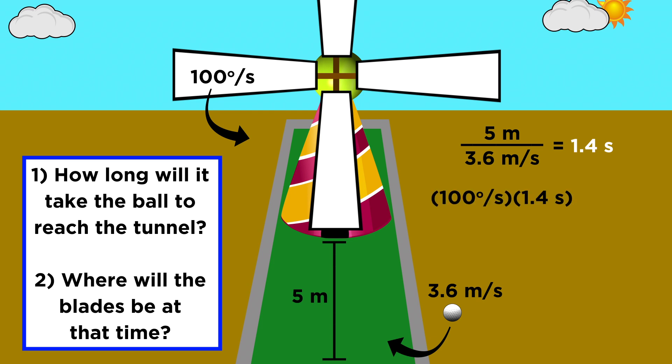The windmill rotates at one hundred degrees per second, so we multiply that by one point four seconds, and we get one hundred forty degrees.